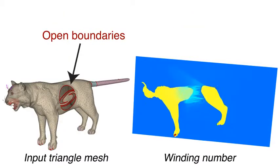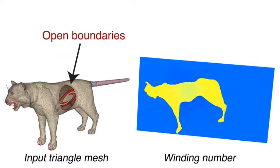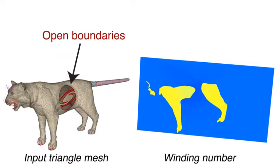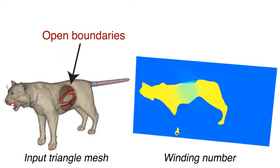The winding number is well-defined and even harmonic, regardless of the self-intersections, non-manifold edges, and open boundaries in the input mesh.